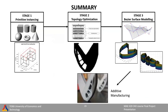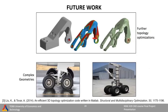To summarize the whole process: firstly, we started with primitive instancing where the front landing gear was roughly modeled. After that, topology optimization was done to find the optimal material layout. With Bezier surface modeling, an optimized model structure was created. At the end, the additive manufacturing method was used to make a physical model of the part. As for future work, further and more detailed topology optimizations can be done while using more complex and sturdy geometric structures.